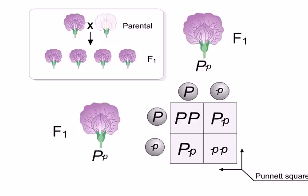Using the information provided, predict the phenotypes of the offspring. Drag the correct phenotypes to each square in the grid.